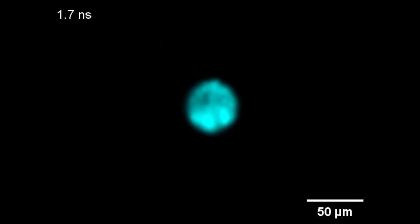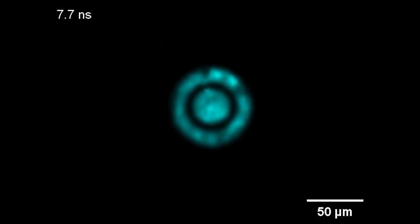Wang calls it phase sensitive compressed ultra-fast photography, or P-cup, and it's a combination of his previous camera and phase contrast microscopy. A 100-year-old technology that images how light waves slow down and speed up when entering and leaving materials.